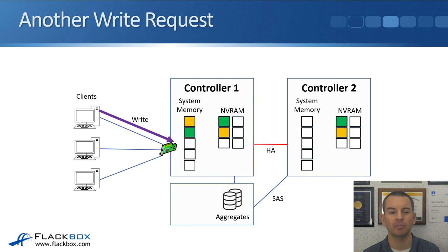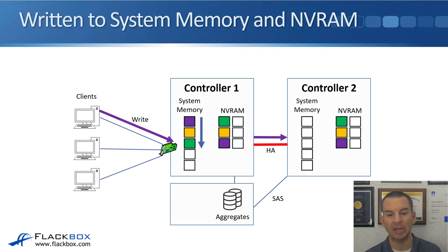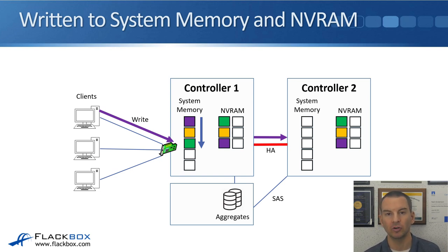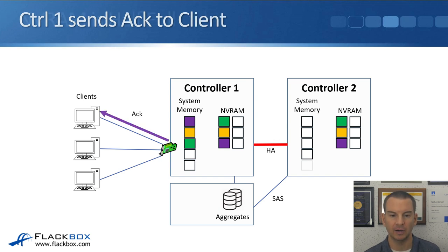Then we have another write request come in for purple data. The same thing happens: it gets written to system memory and NVRAM on Controller 1, goes into the top slot in system memory with everything else bumped down a slot, and also gets written to NVRAM on Controller 2 via the HA connection. Once it's in NVRAM on Controller 2, Controller 2 sends an acknowledgement back to Controller 1, which then sends an acknowledgement to the client.